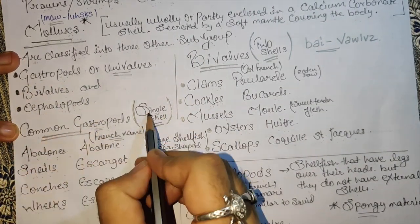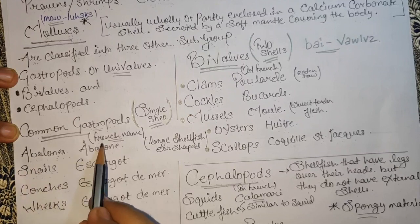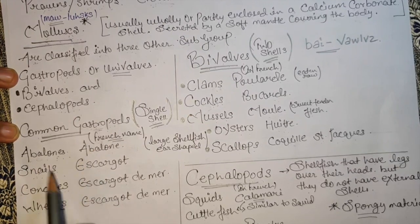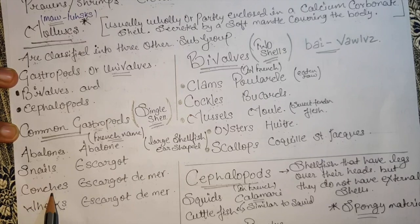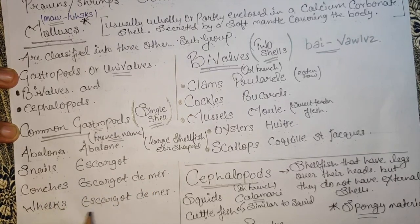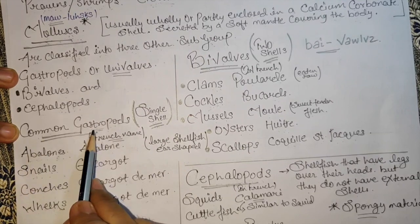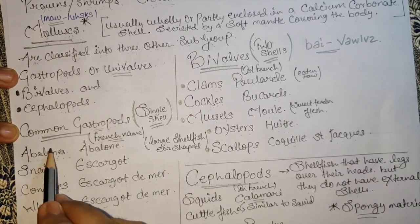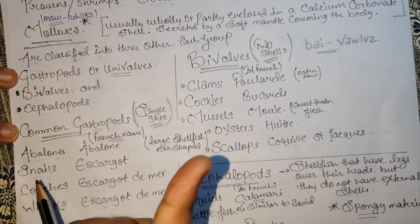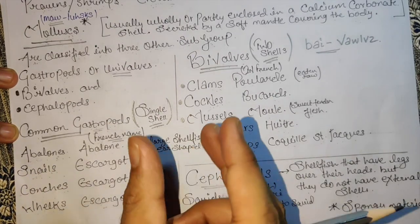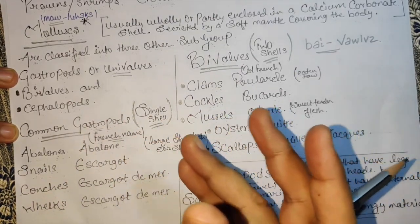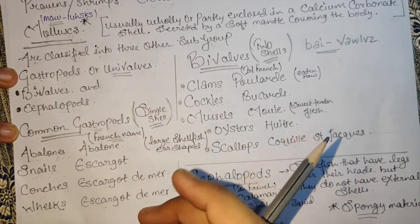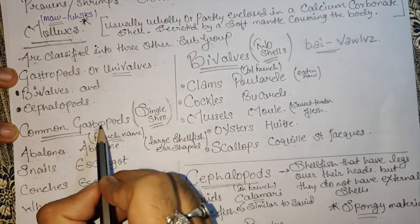Gastropods have a single shell. Examples include: abalone ('ormeau'), snails ('escargot'), and conch ('coquille de mer'), and whelks ('coquille de mer'). As you can see, gastropods have only one single shell on top, and inside is very soft, tender flesh.